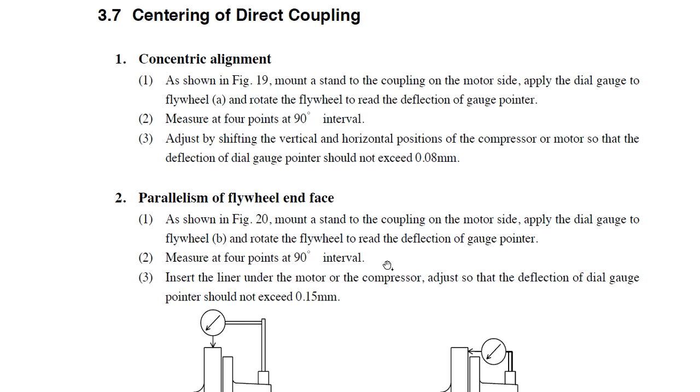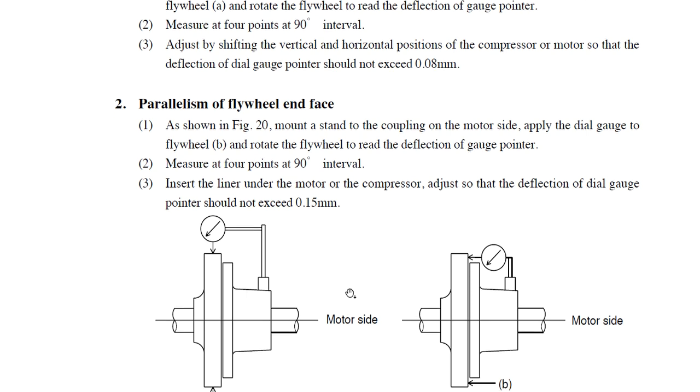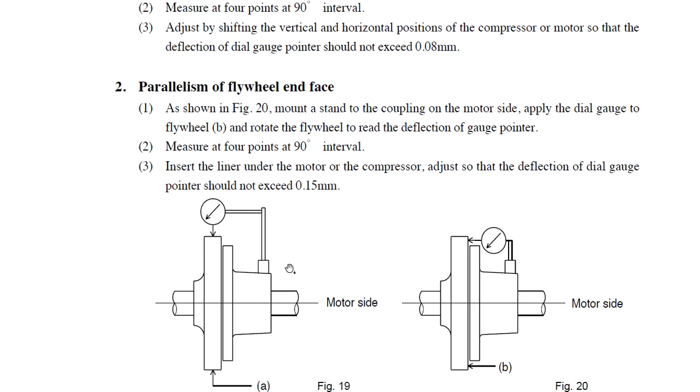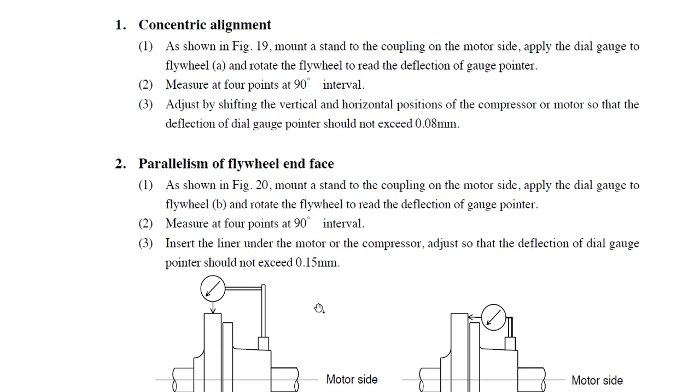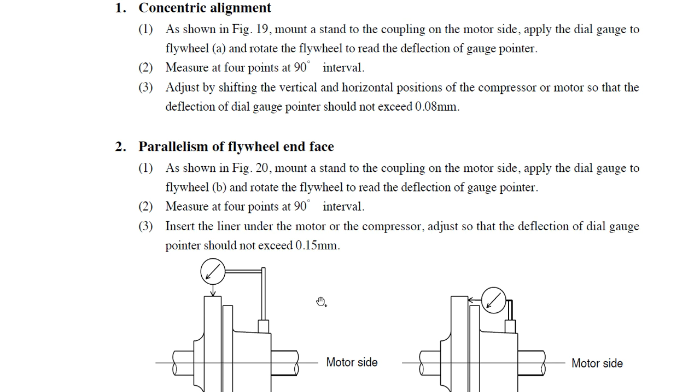As shown in Figure 19, this is the concentric alignment and how to mount the dial gauge. The magnet we will line here on the motor side, and the dial gauge will be applied here on the flywheel.